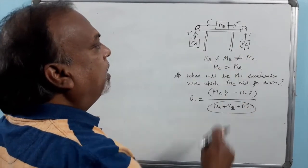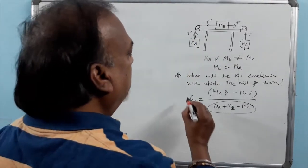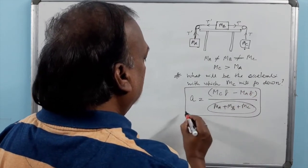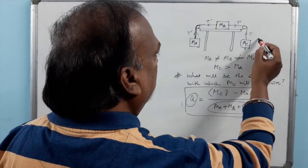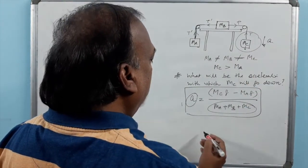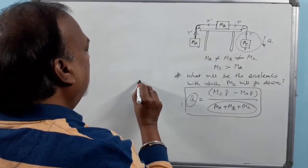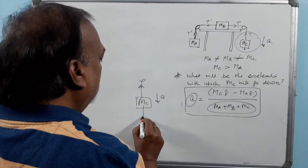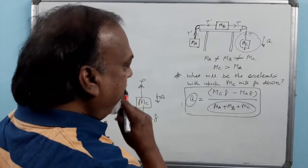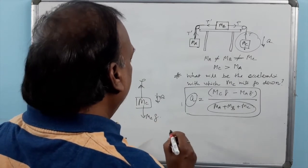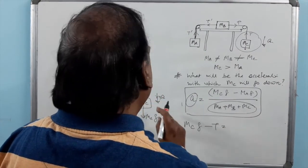Acceleration will be caused by the difference in forces between the two hanging masses. The unbalanced force is MCg minus MAg. For the total system, the total mass is MA plus MB plus MC, since all three come into play when MC moves down. So acceleration A equals (MCg minus MAg) divided by (MA plus MB plus MC).